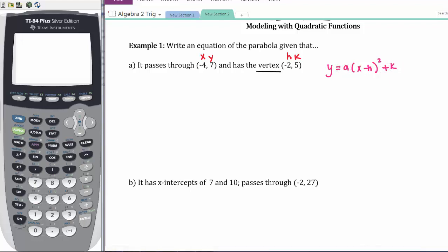I'm going to substitute these values in. So I get 7 = a(-4 - (-2))² + 5. Simplifying: 7 = a(-2)² + 5. Subtract 5 from both sides gives me 2 = 4a. So a equals one half.